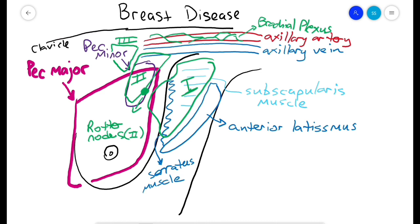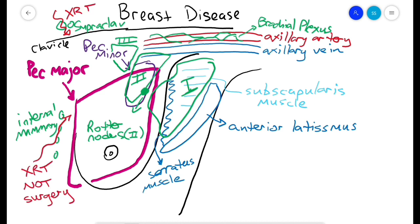The supraclavicular and internal mammary nodes are occasionally involved in breast cancer but tend not to be surgically removed. They do change stage and are usually radiated. Batson's plexus is a network of venous drainage from the breast that is thought to be a route of direct metastasis to the spine.